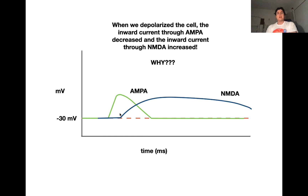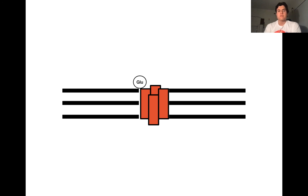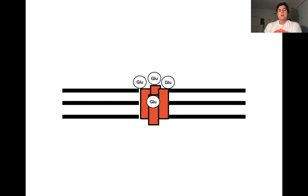To understand what is going on, we have to look at the NMDA receptor itself. The NMDA receptor is a tetramer — it has four subunits, and each subunit has a binding site for glutamate. When glutamate binds to its binding site on a subunit, it opens a gate. The more glutamates that bind to an NMDA receptor, the more gates that open and the greater the current passing through it. The NMDA receptor will pass the maximum amount of current when four glutamates are bound to it.